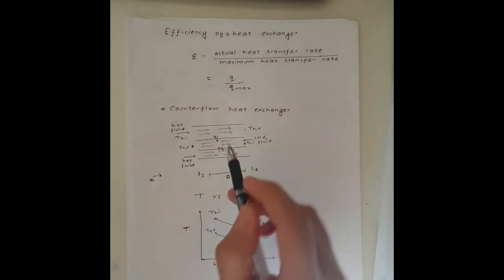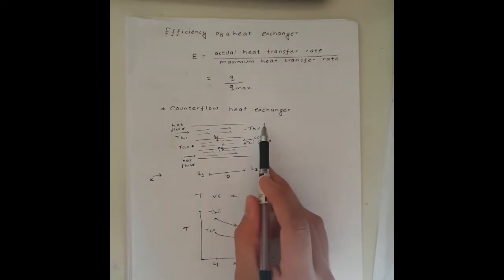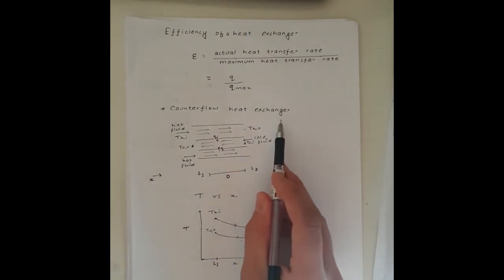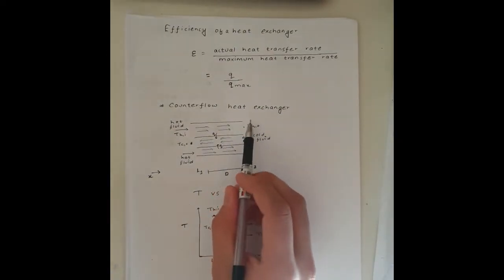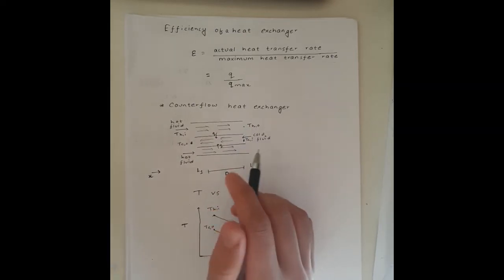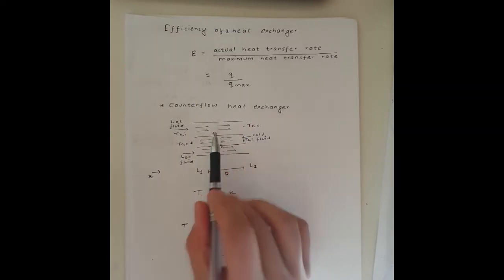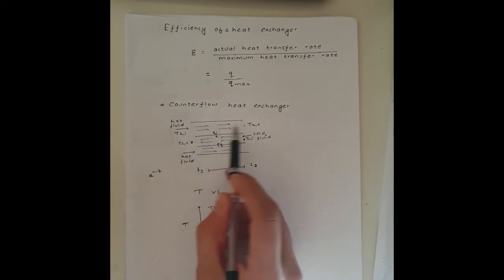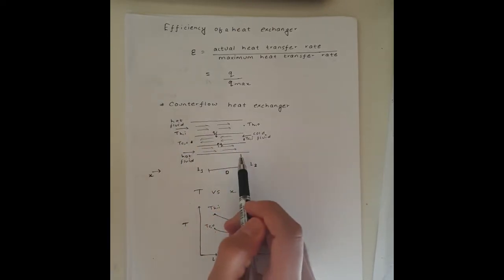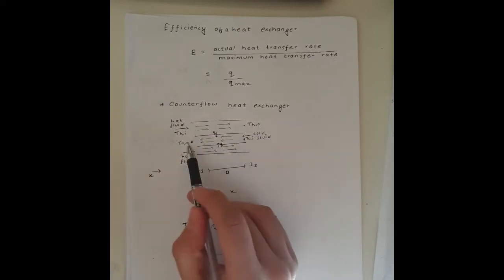Let's see how a counterflow heat exchanger actually looks. It has two concentric tubes: in the outer tube the hot fluid flows from left to right, and in the inner tube the cold fluid moves from right to left.